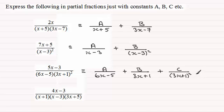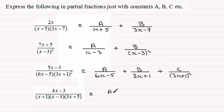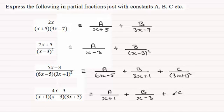Alright, so I hope you were able to get that one. In this last one, what we've got is three linear factors. In the previous video I only showed you ones with two linear factors, but we just extend this by putting a constant over each one of the linear factors. So for this example it's going to be a over (x+1), plus another constant b over the next linear factor (x-3), and then finally another constant c over the last linear factor (3x+5).